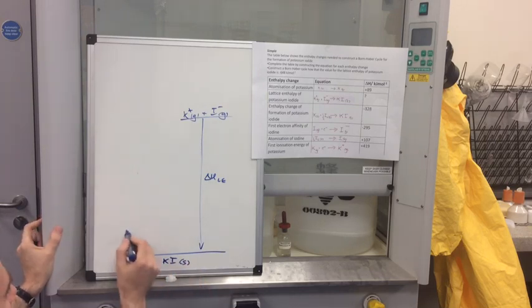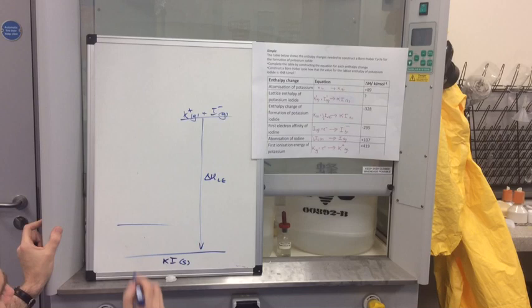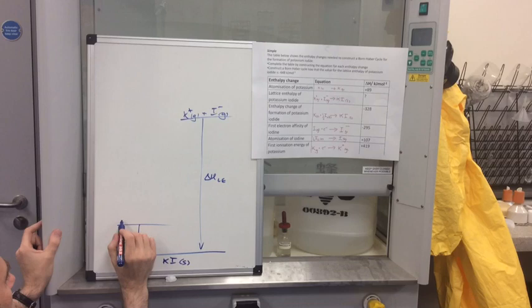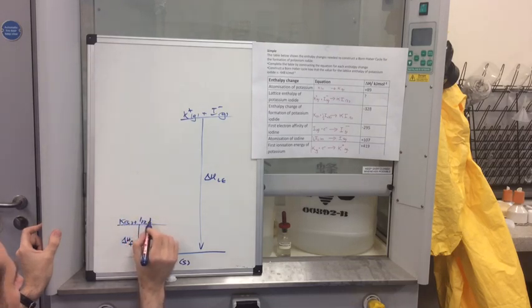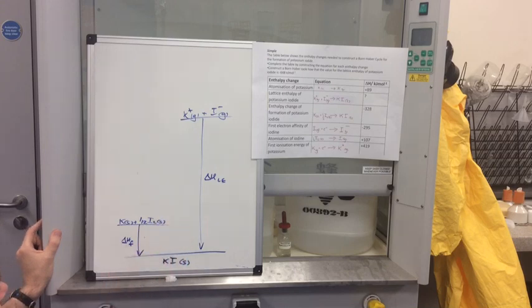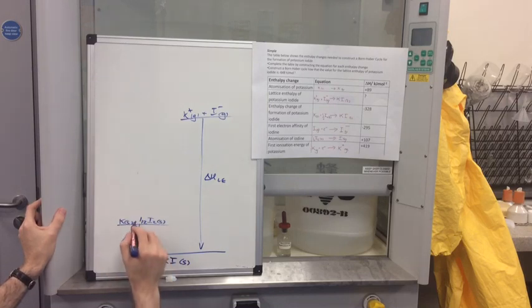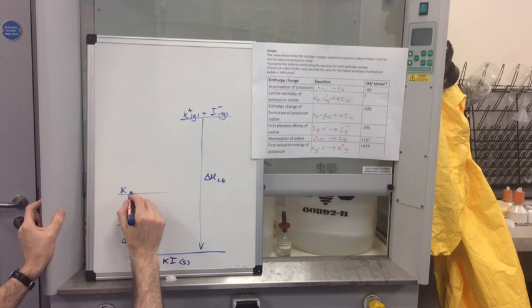So we've got the enthalpy of formation which is going to live on this arrow here, delta H formation. And so we form one mole of KI solid from the element in the standard state. So that's K solid plus a half I2 solid. We then atomise the two substances. So we atomise one at a time. So that's K gas.